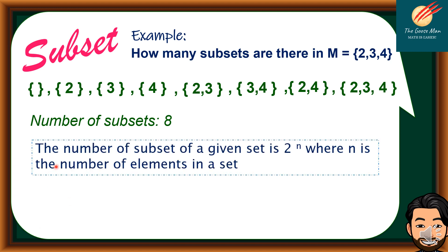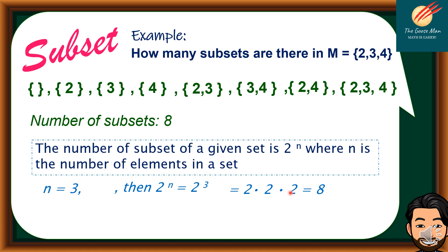The number of subsets of a given set is 2 raised to N, where N is the number of elements in a set. Looking back at set M with 3 elements, N = 3. Using the formula 2^N, we substitute 3: 2 × 2 × 2 = 8. Therefore, the number of subsets is equal to 8, having 3 elements in the set.